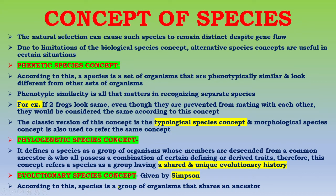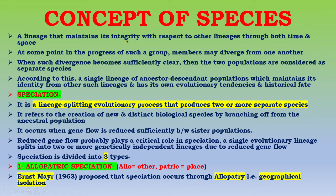The next species concept was given by G.G. Simpson — the evolutionary species concept. According to this concept, a species is a group of organisms that shares an ancestor and a lineage that maintains its integrity with respect to other lineages through both time and space. At some point in the progress of such a group, members may diverge from one another. When such divergence becomes sufficiently clear, the two populations are considered separate species. A single lineage of ancestor-descendant populations maintains its identity from other such lineages and has its own evolutionary tendencies and historical fate.